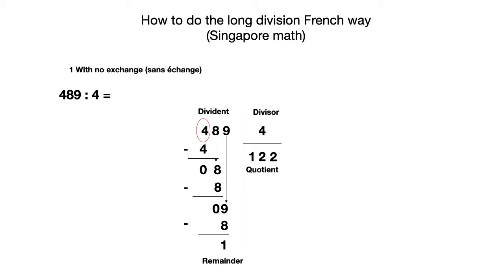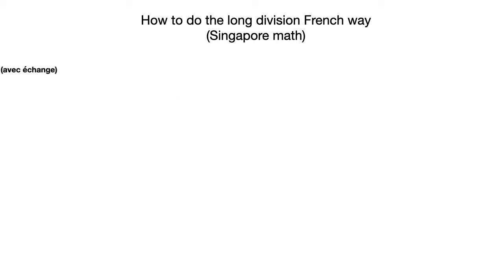So 489 divided by 4 — the quotient is 121 with a remainder of 1. Now let's see with exchange, avec échange. Let's try with 599 divided by 4; we're going to do basically the same.